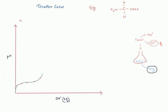At the beginning, glycine is in its fully protonated form. The NH2 group is protonated to NH3⁺, which is the maximum number of protons it can accommodate. The carboxyl group is also protonated as COOH — it has not yet lost its hydrogen to become COO⁻. This is the fully protonated form of glycine.